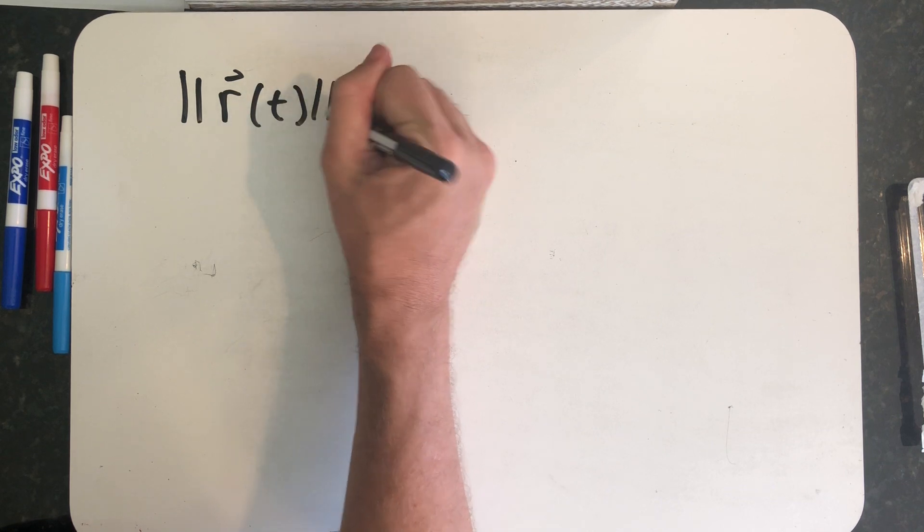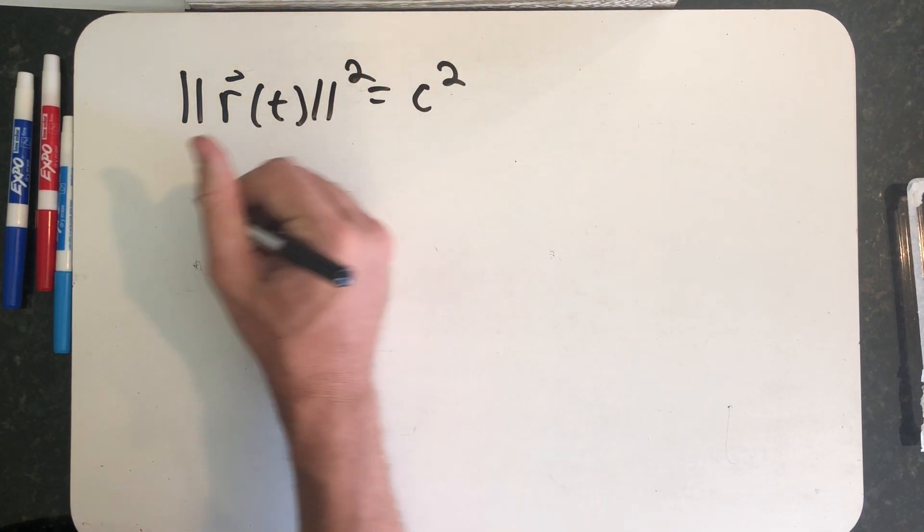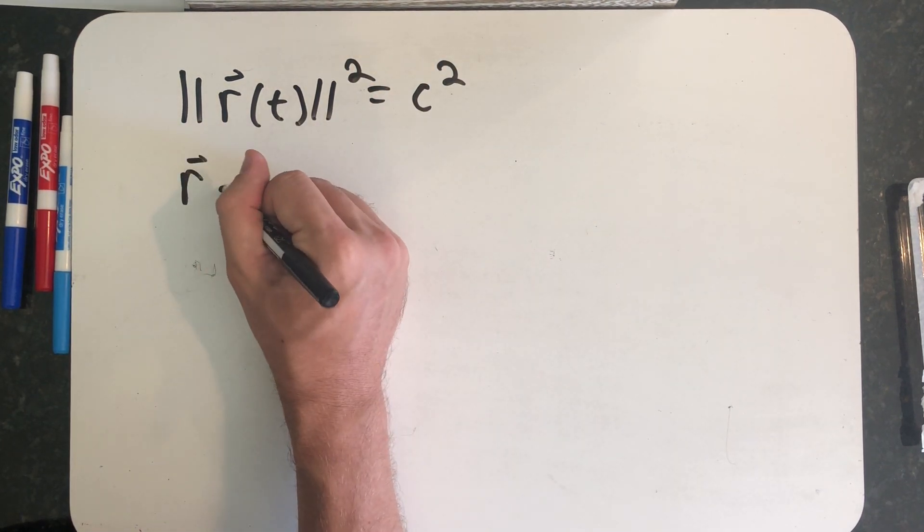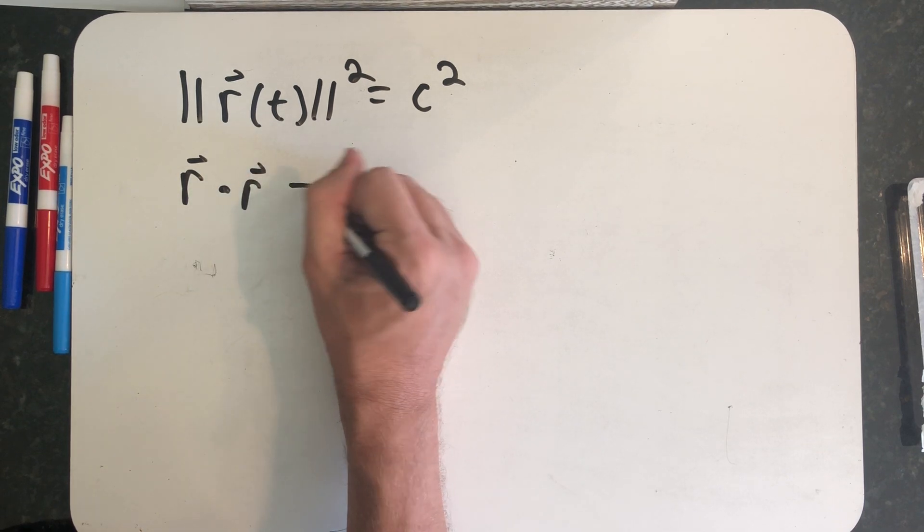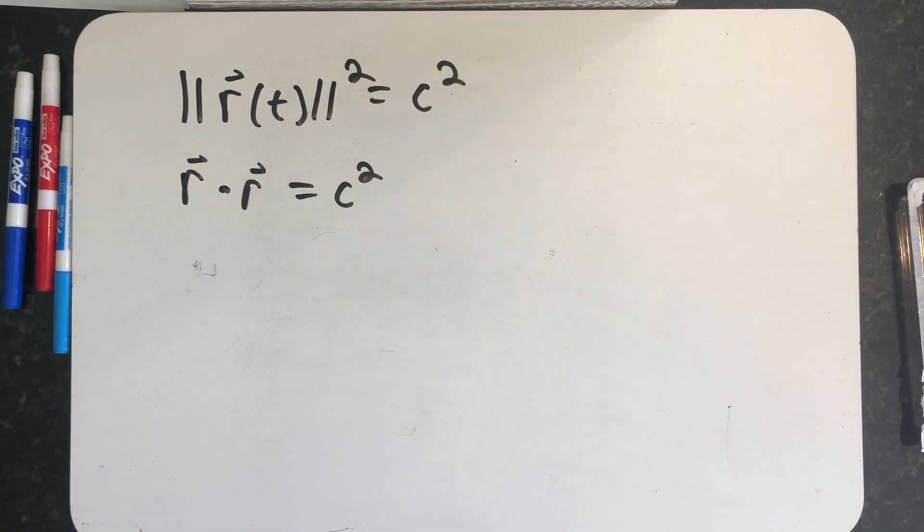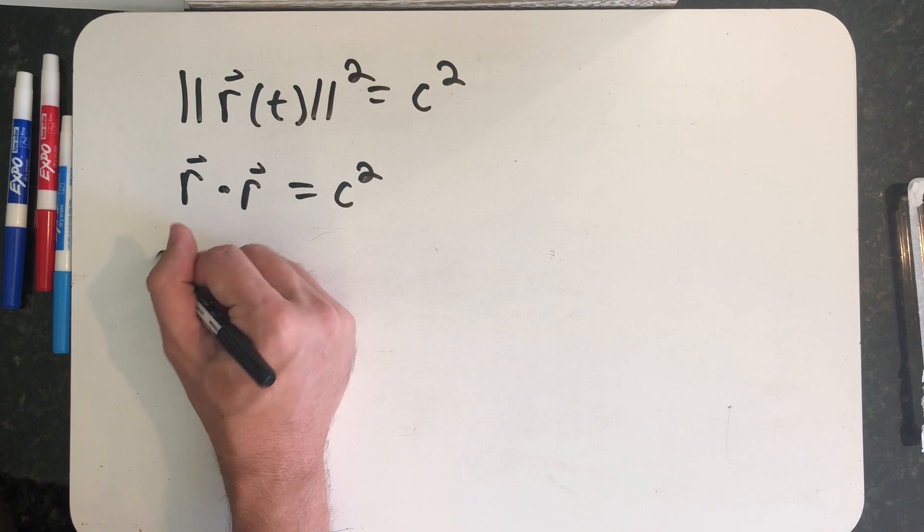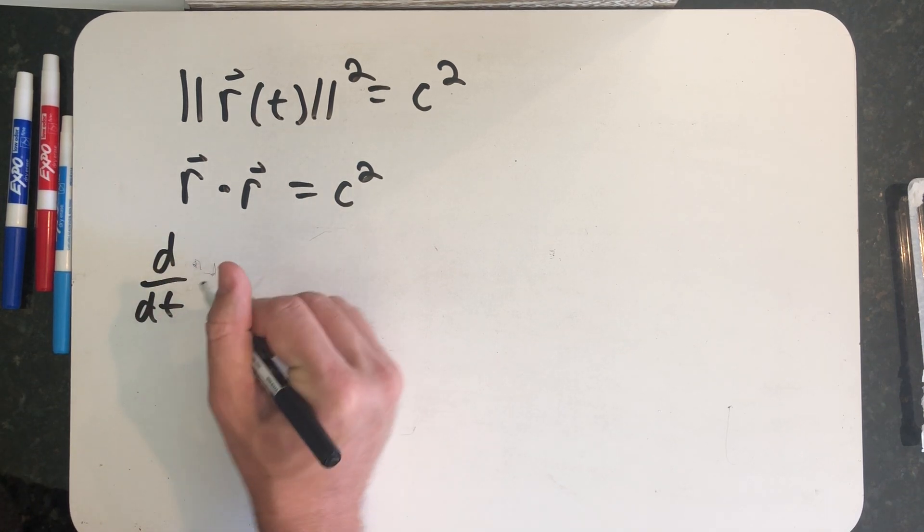So the magnitude of R of t squared is C squared, which means R dot R is equal to C squared. The dot product of a vector with itself is the magnitude squared. And what I want to do now is take the derivative of both sides of that equation.